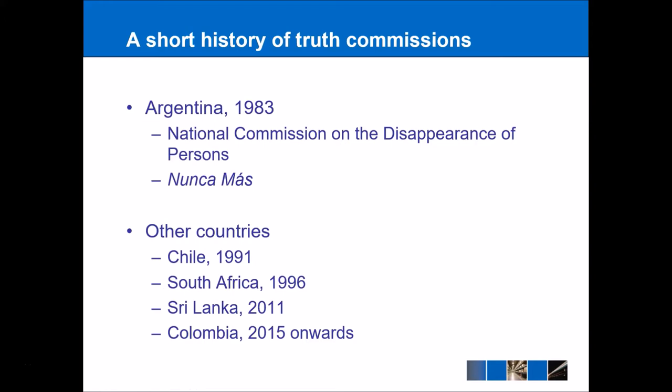Finally, the most recent example of a truth commission is in Colombia. Colombia has suffered from la violencia, or the violence, since the 1960s. But in November 2012, the two parties came together — the president, Juan Manuel Santos, and the leader of the FARC rebels, Rodrigo Londoño — in Havana to discuss peace terms. In June, they agreed that a truth commission should be set up when a peace deal is finally reached, and it will be interesting to watch this space and see how this progresses and whether the truth commission is a success or not.